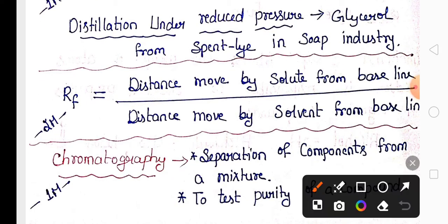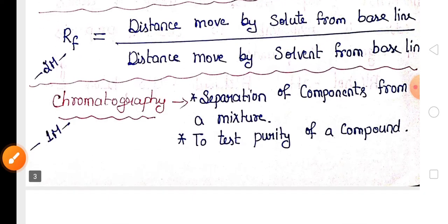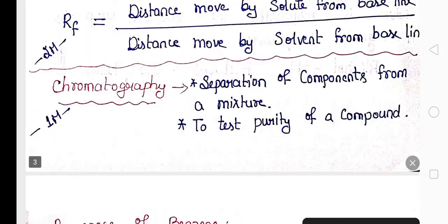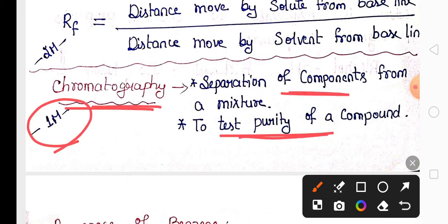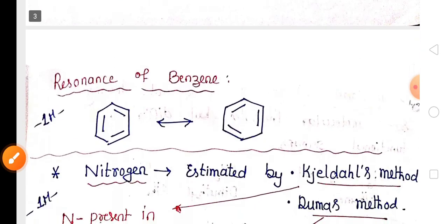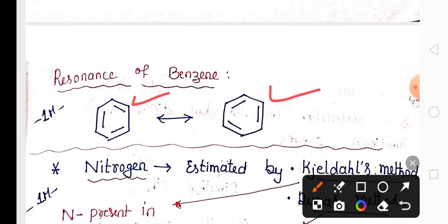The formula for retention factor (Rf) is very important for one or two marks. Similarly, the applications of chromatography — to separate components from a mixture and to test the purity of compounds — are very important for one or two marks.